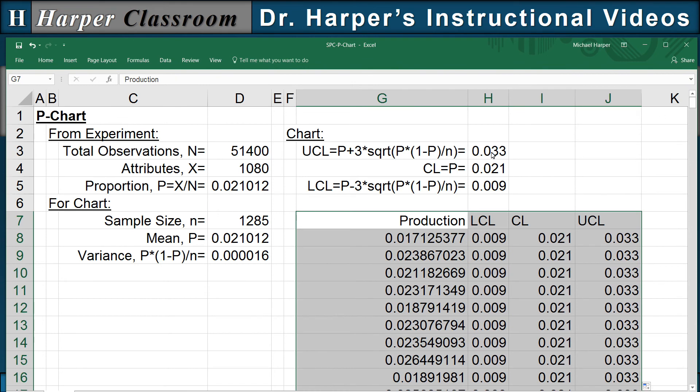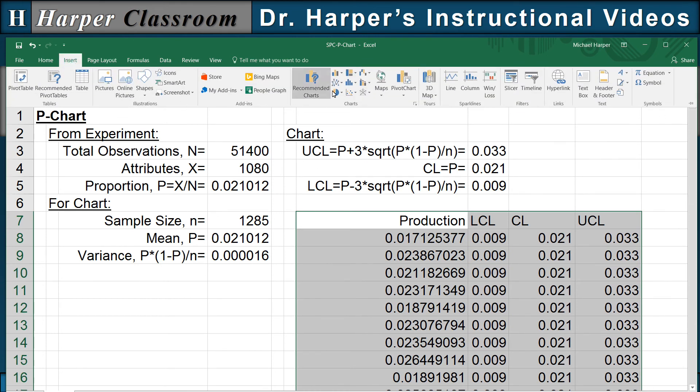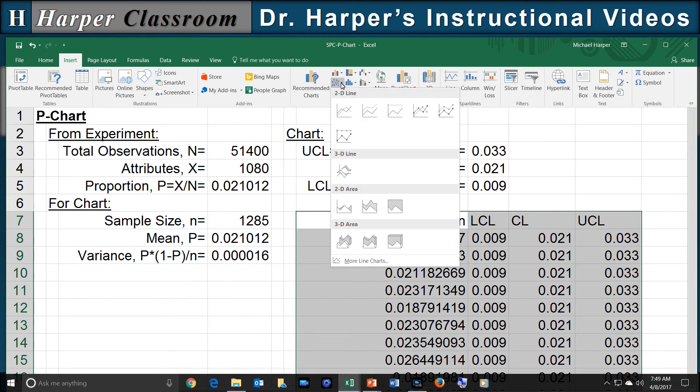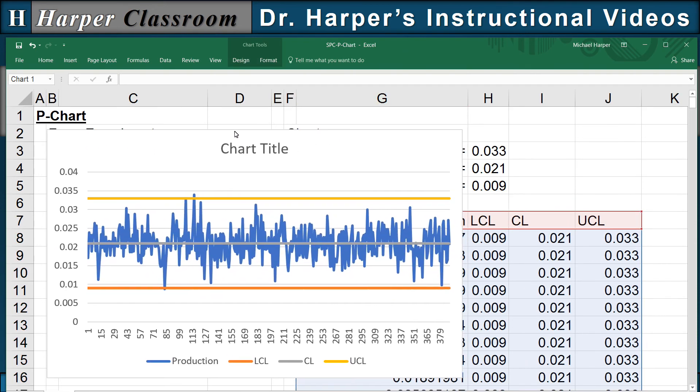And now to see what the process control chart looks like, we go to insert. And up here on a line chart, line graph, we pick the first stacked lines.